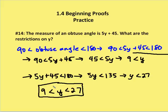So the result is that the restrictions on y are that it has to be between 9 and 27, but not inclusive of 9 and 27.